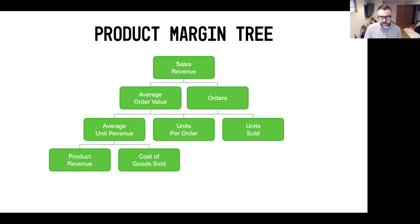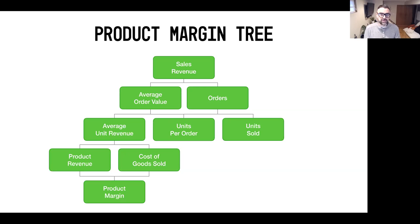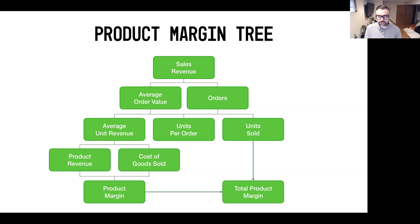Then we've got your cost of goods sold. As we talked about in the first couple of lessons, your cost of goods sold is what it costs you on a per-product basis to manufacture or produce that product. Those two combined — if you take your gross profit, which is revenue minus cost of goods sold, that yields your product margin. To calculate the overall product margin: units sold multiplied by your product margin gives you your total product margin.